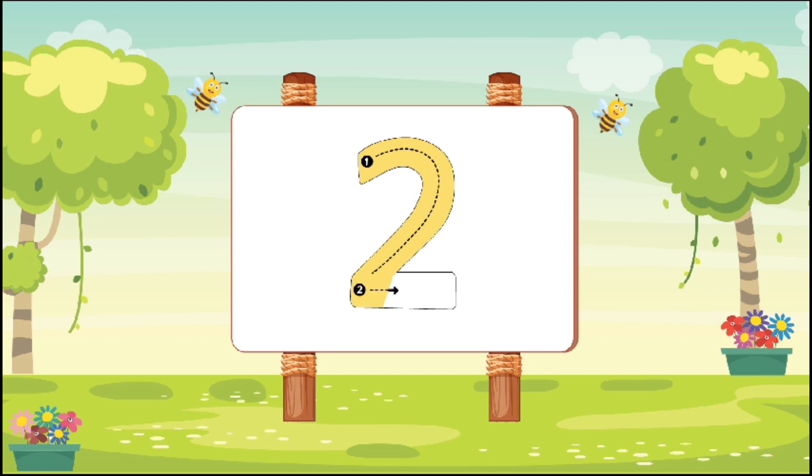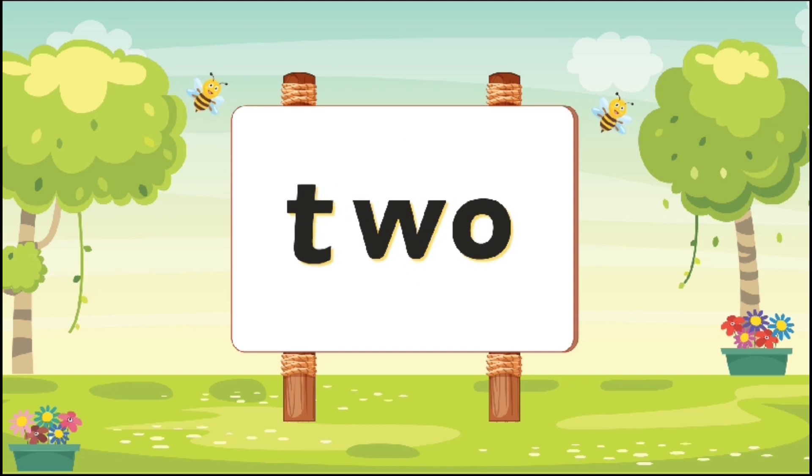And straight across. That is how we write number two. Let us do it again. Up and around, down to the right, and straight across. That is how we write number two. The number name is two, T-W-O.